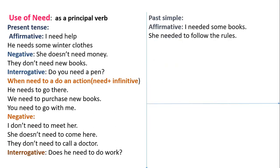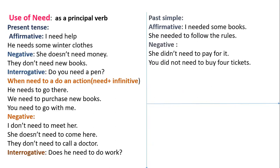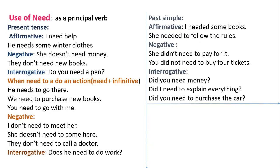In the past simple: 'I needed some books', 'She needed to follow the rules.' Negative past: 'She didn't need to pay for it', 'You did not need to buy four tickets.' Interrogative past: 'Did you need money?', 'Did I need to explain everything?', 'Did you need to purchase the ticket?'